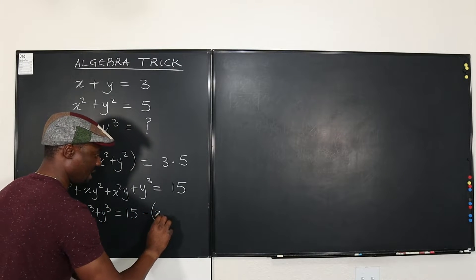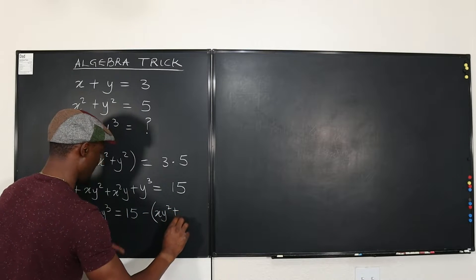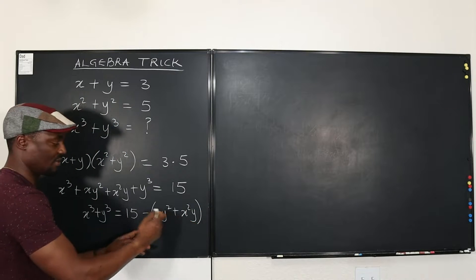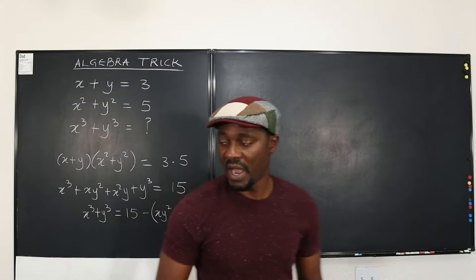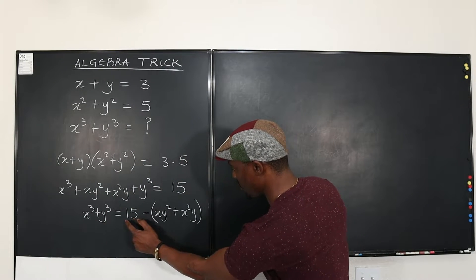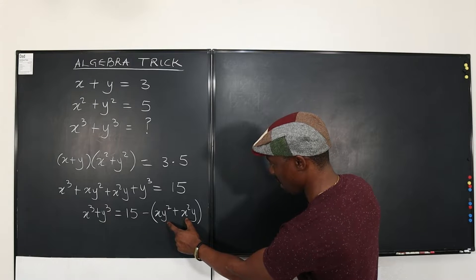that's XY² + X²Y. Okay, I put it in parentheses, otherwise I would use minus minus. So now this is what I'm looking for. I already got a portion of it. But I'm just looking for this.